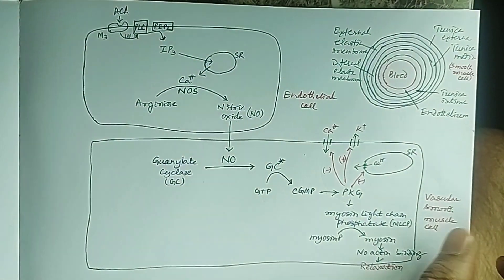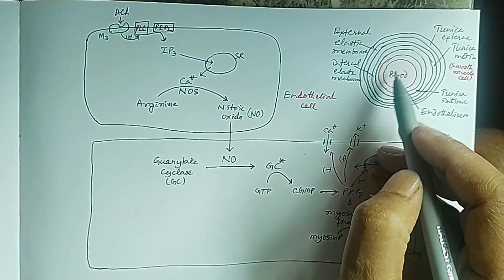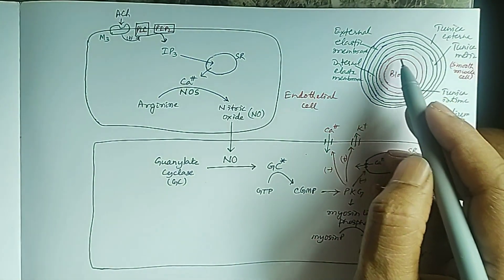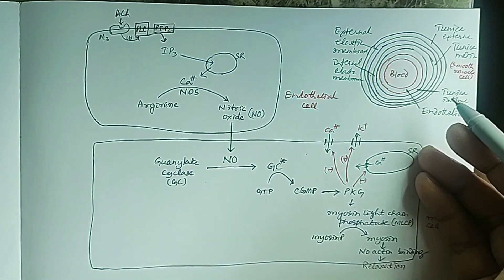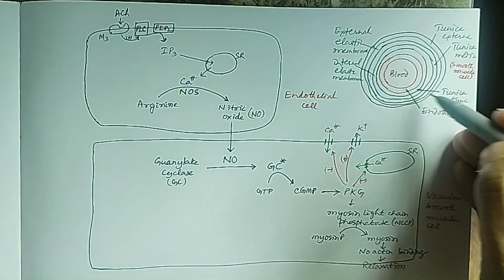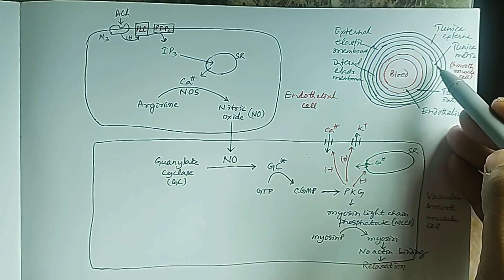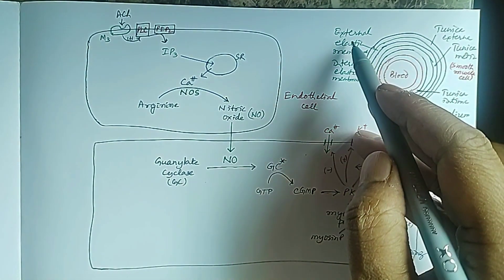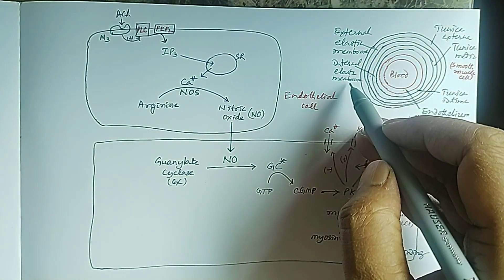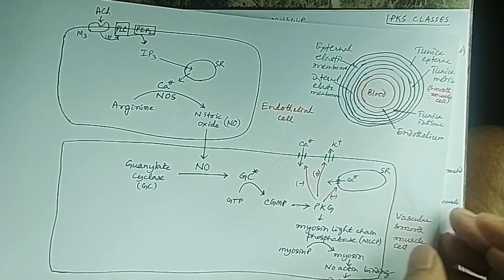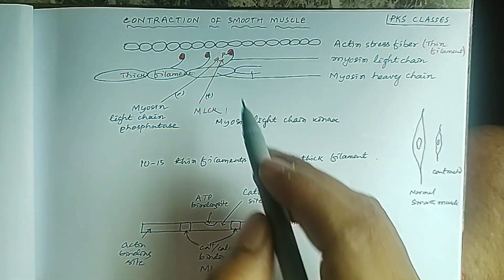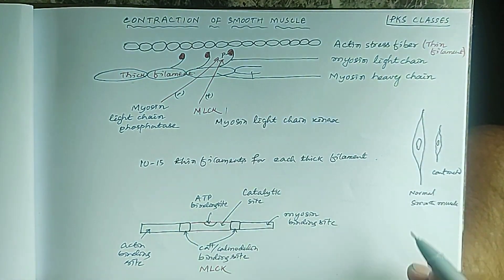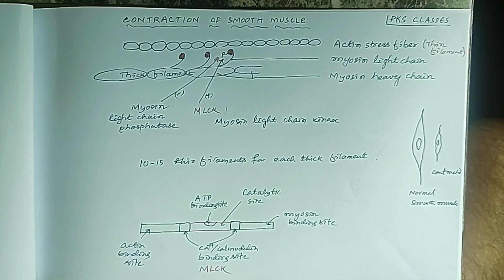This is the mechanism of contraction and relaxation of smooth muscles in blood vessels — vascular smooth muscle. In blood vessels, the innermost layer is the endothelium, surrounded by smooth muscle cells. The vessel wall consists of three layers: tunica intima (innermost), tunica media (middle), and tunica externa (outermost). Between tunica externa and tunica media is the external elastic membrane, and between tunica media and tunica intima is the internal elastic membrane. Smooth muscle contraction occurs by this mechanism where myosin is phosphorylated by MLCK, then myosin-phosphate binds with actin resulting in contraction. Thank you.